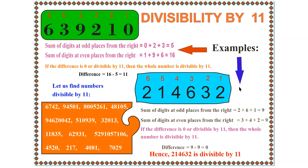Let us do another example. The number is 214632, which has 6 places. Sum of digits at odd places from the right: 2 plus 6 plus 1 equals 9. Sum of digits at even places from the right: 3 plus 4 plus 2 equals 9. The difference is 9 minus 9 equals 0. Since the difference is 0, as per the rule, this number is divisible by 11.